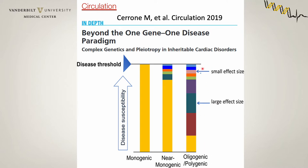I would say that many of our diseases are near monogenic — that is, there's one variant with a fairly strong effect, not quite enough to get to the disease threshold, but just add one or two or maybe a few other small effect variants, or in some cases environmental modifiers, and that's enough to get you to the disease threshold.